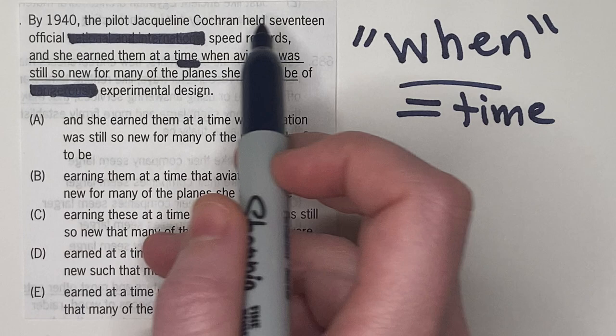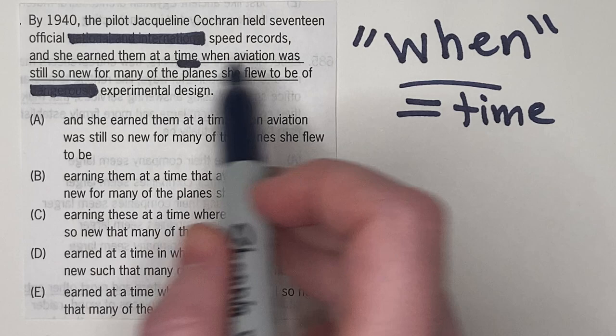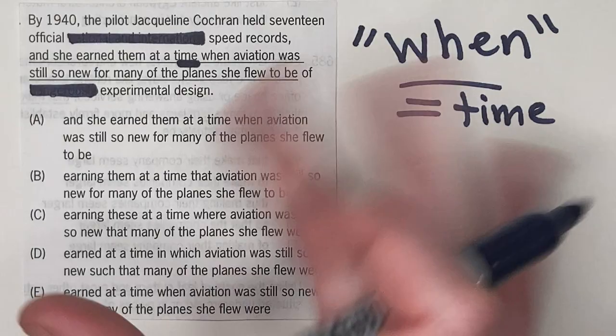All right, by 1940, the pilot Jacqueline Cochran held 17 official speed records, and she earned them at a time when aviation was still so new for many of the planes she flew to be of experimental design.